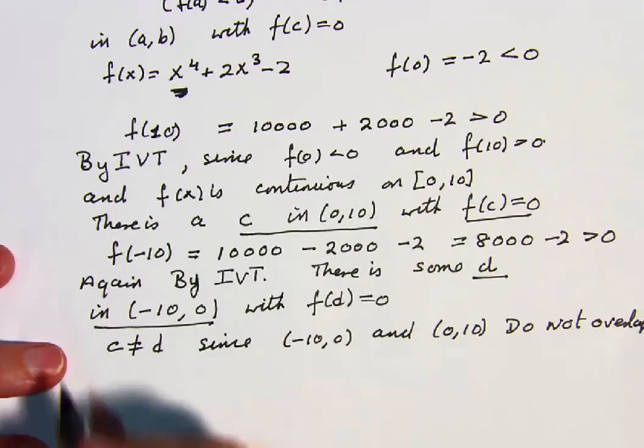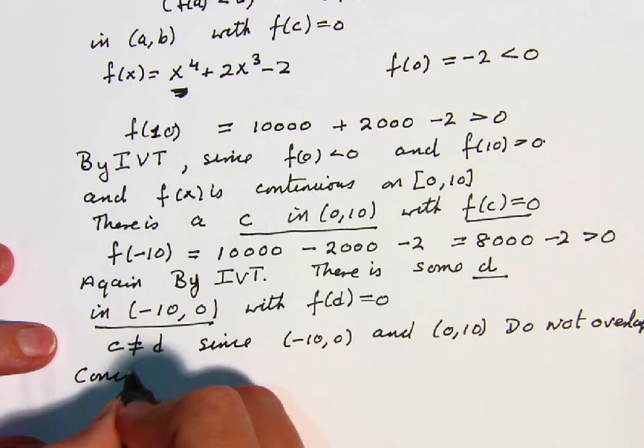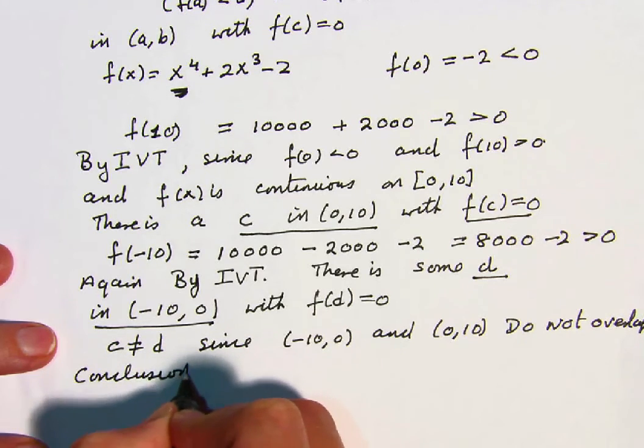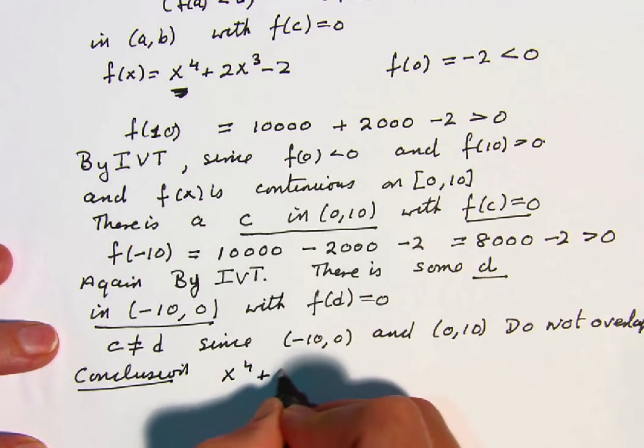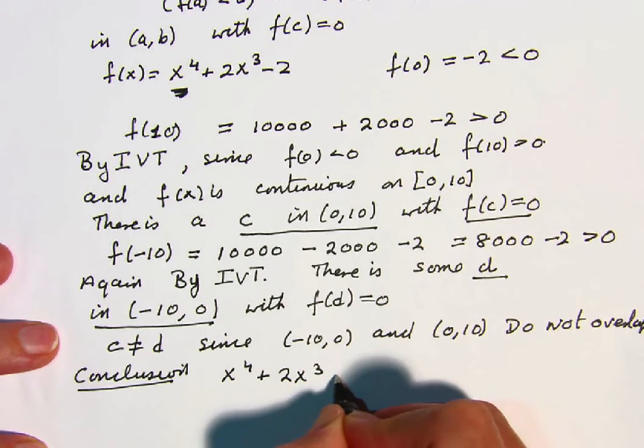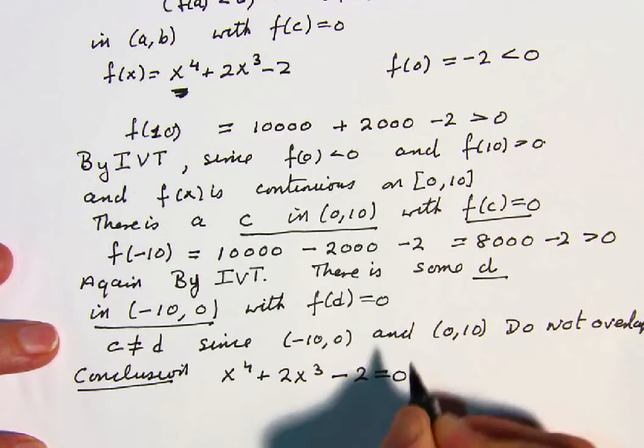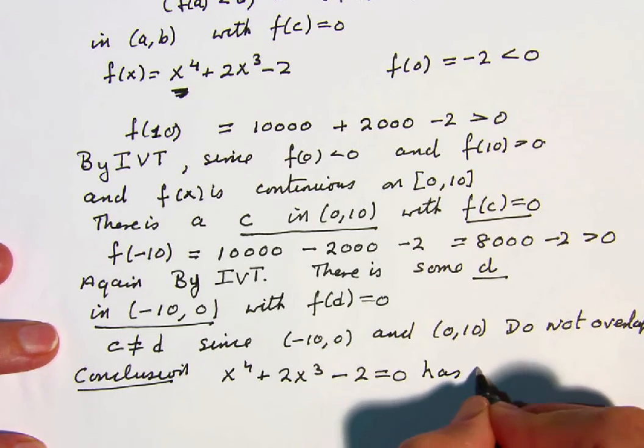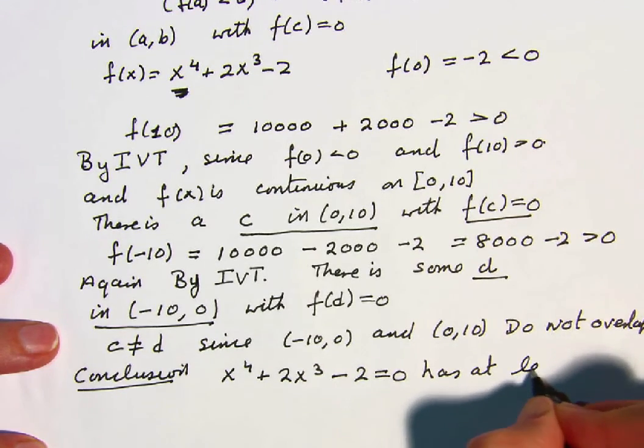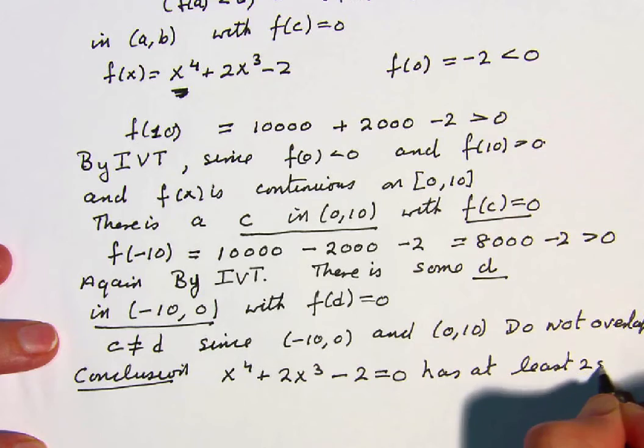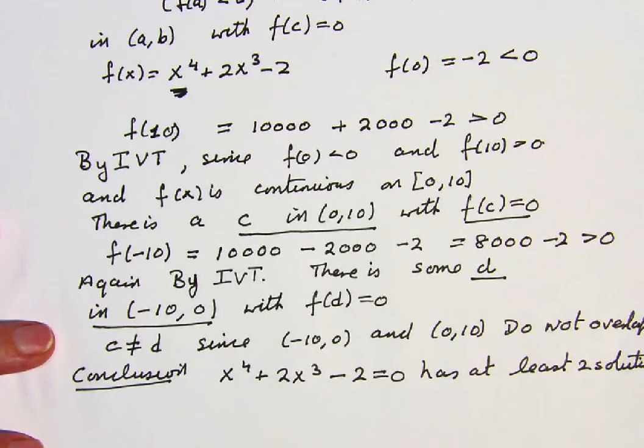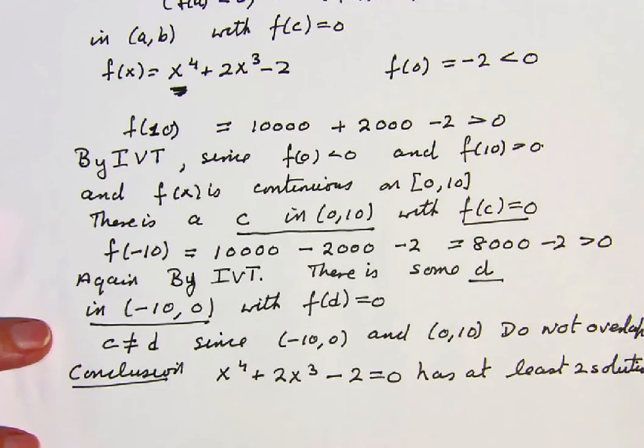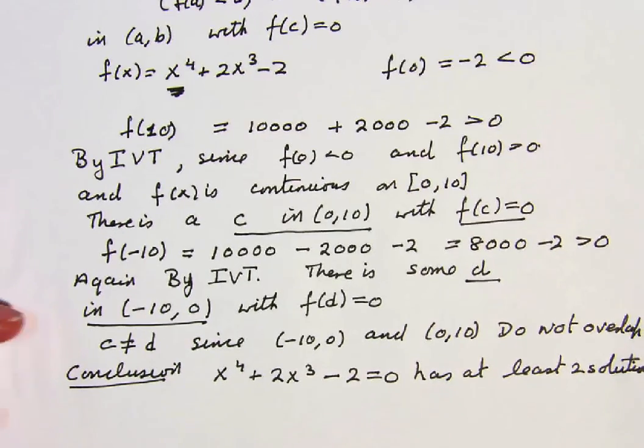So my conclusion is that x to the 4 plus 2x cubed minus 2 equals 0 has at least two solutions. It may have more, it may even have more in those intervals, but all I know right now is that it has at least two.